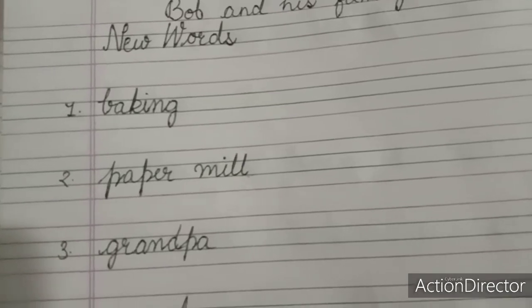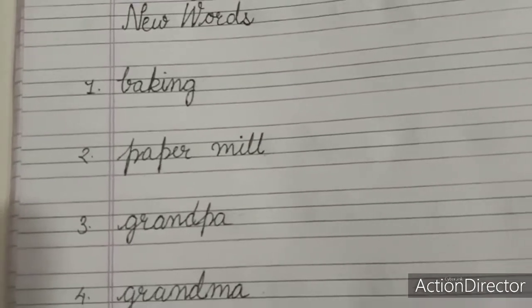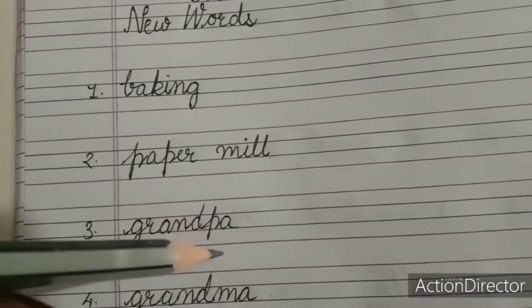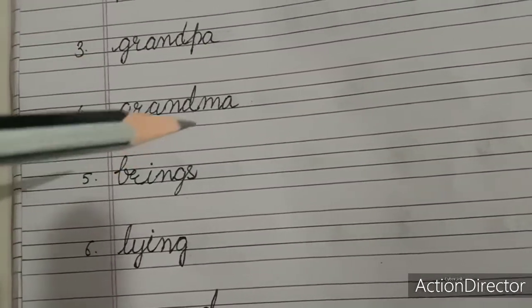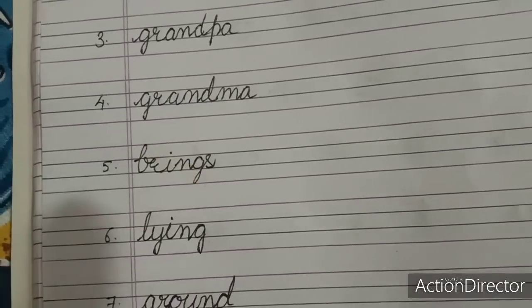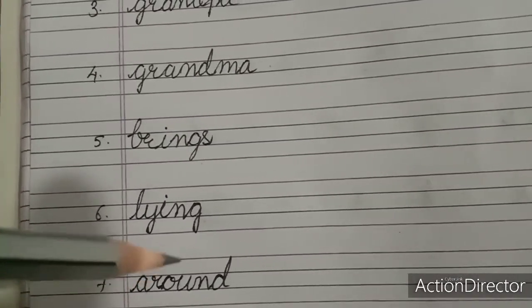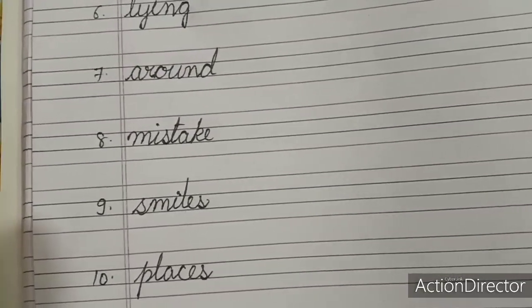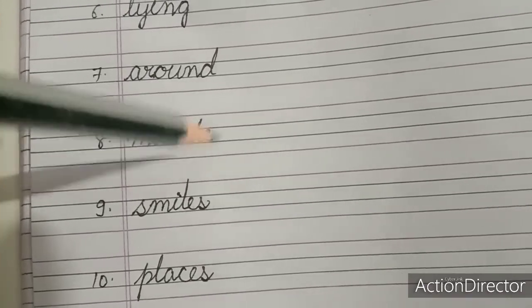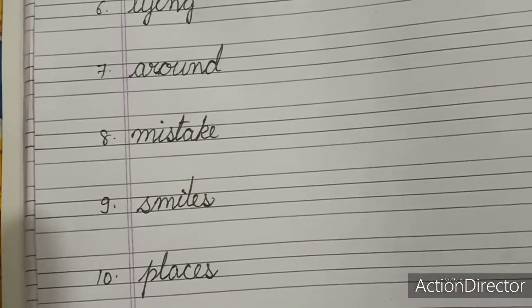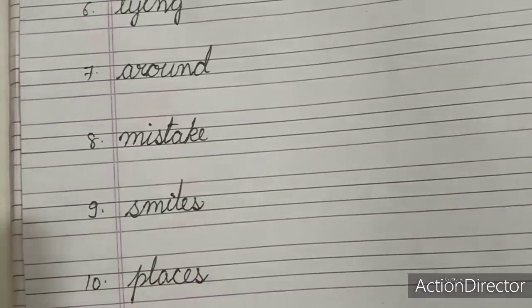Paper mill. P-A-P-E-R paper. M-I-L-L mill. Grandpa. G-R-A-N-D-P-A grandpa. Grandma. G-R-A-N-D-M-A grandma. B-R-I-N-G-S brings. L-Y-I-N-G lying. A-R-O-U-N-D around. M-I-S-T-A-K-E mistake. S-M-I-L-E-S smiles. P-L-A-C-E-S places.